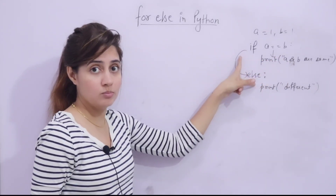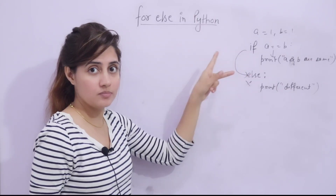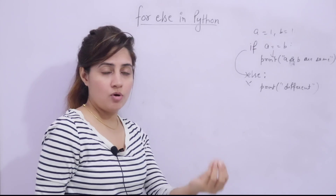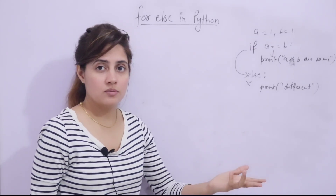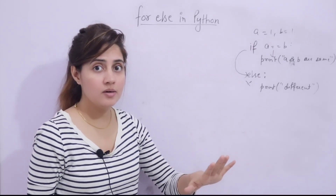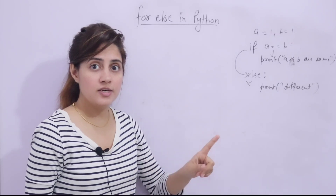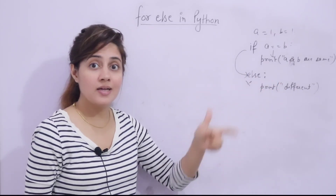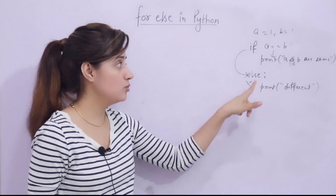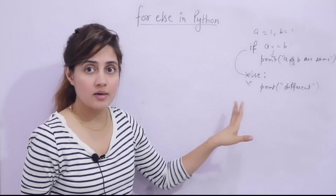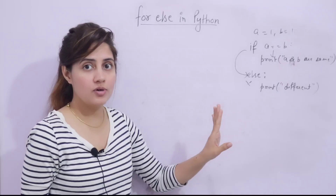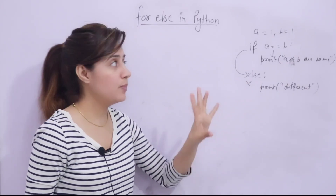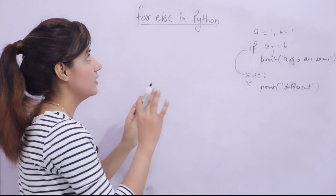Think of it like going to the supermarket where your mom says: buy mangoes, and if mangoes are not available then buy apples. First you search — if mangoes are available you buy mangoes, otherwise you buy apples. Only one thing happens: either mangoes or apples, not both.